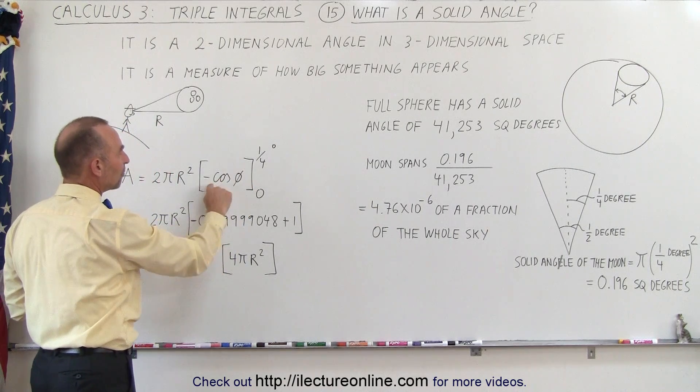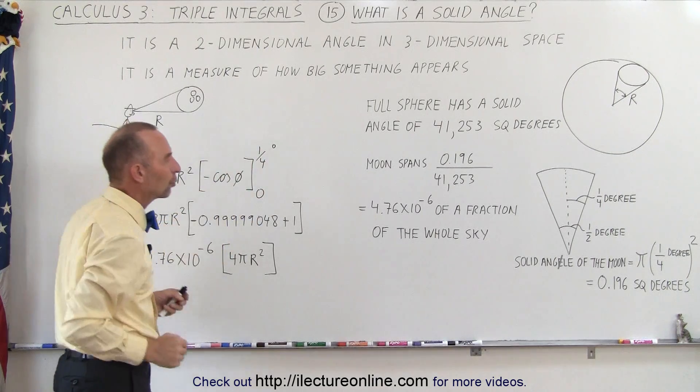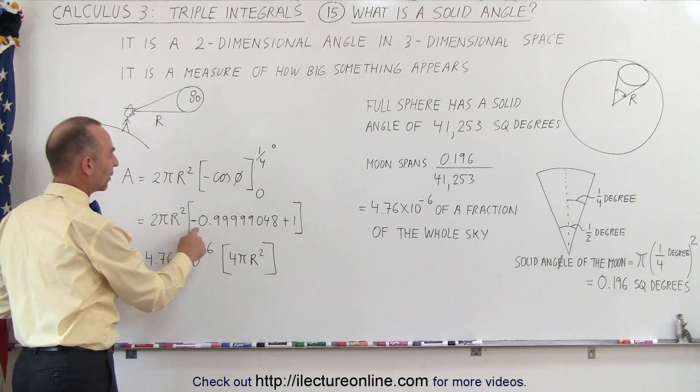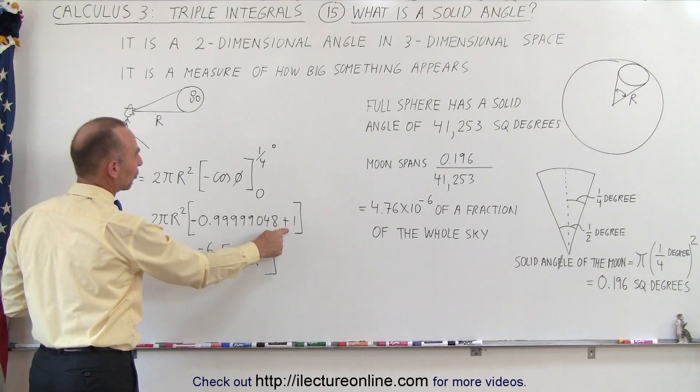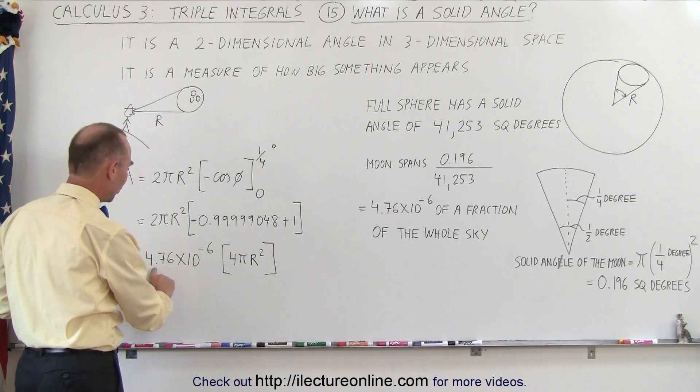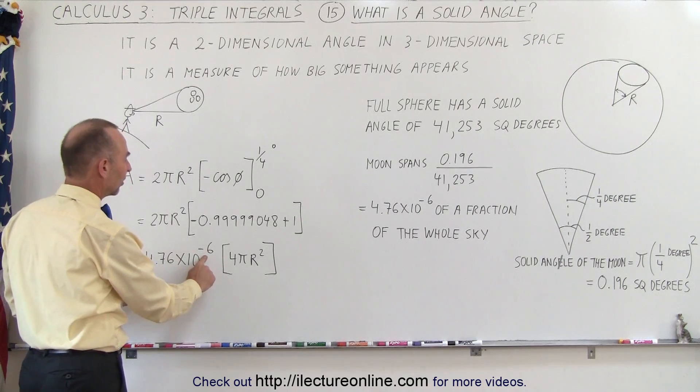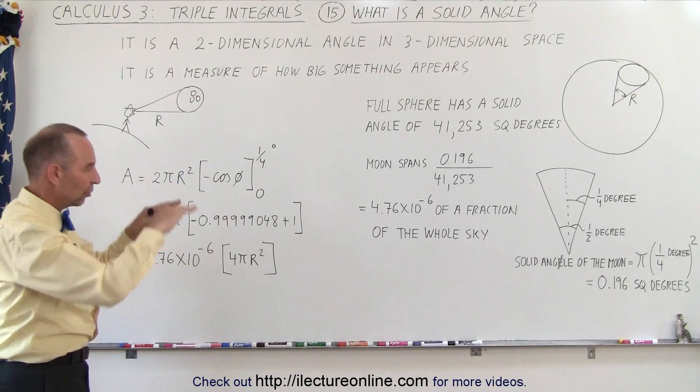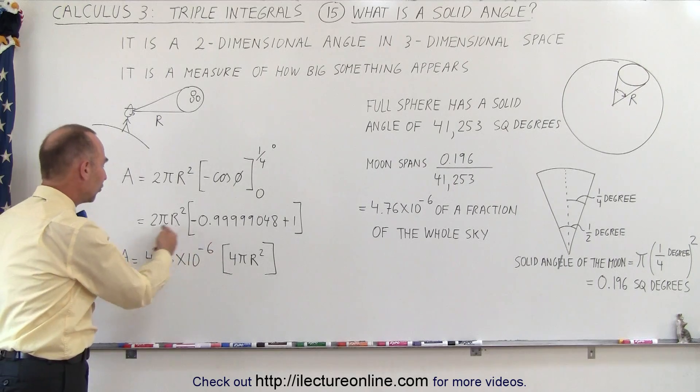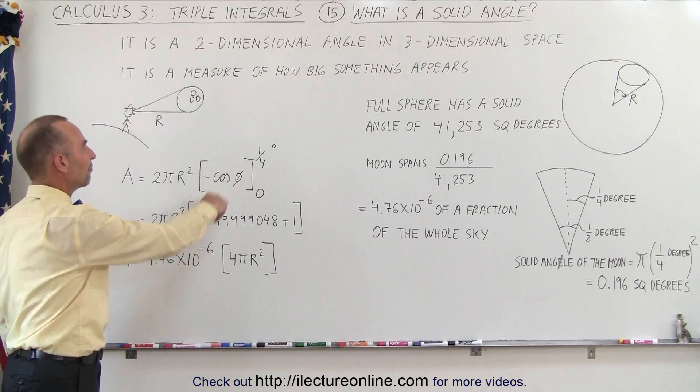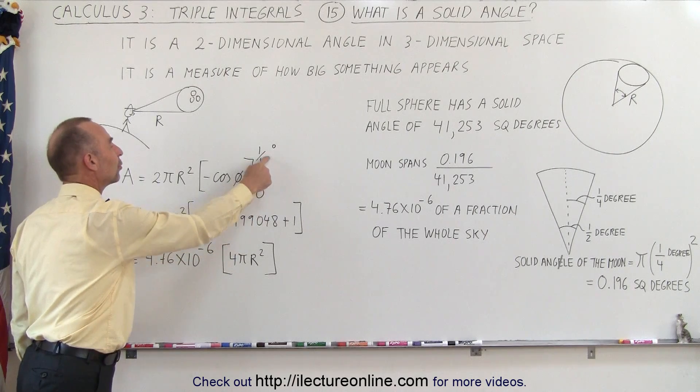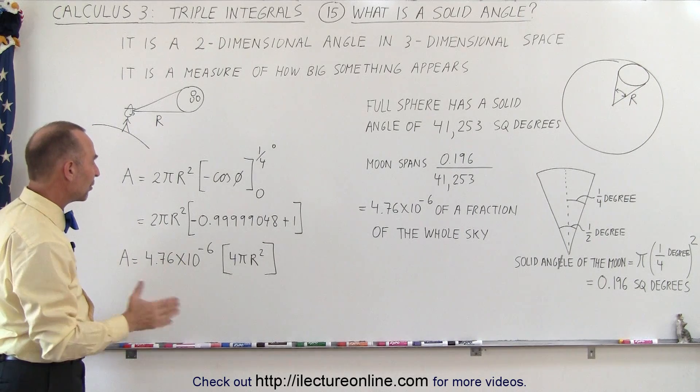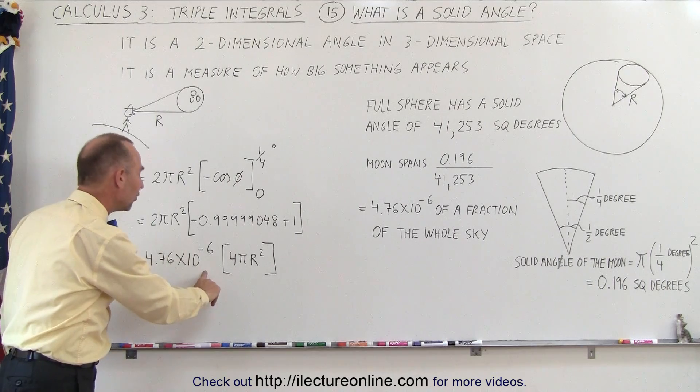So when we evaluate this minus cosine from 0 to 1 quarter of a degree, which is half that angle that spans the total distance there, we get minus 0.99999048 plus 1. And if we do that, notice we get that very same number, 4.76 times 10 to the minus 6, 4 pi r squared. So 4 pi r squared is the size, the surface area of an entire sphere, and this fraction of it, that's the size of the moon relative to that, which can be found by taking the limit from 0 to 1 quarter of a degree of minus cosine of phi in the evaluation of that integral. And we'll show you where that integral came from. And then we get the size of the moon relative to the whole sky.